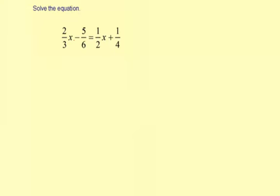Solve the equation. We have 2/3x - 5/6 = 1/2x + 1/4. We have variables on both sides of the equation. Let's try to get the variables on the left and the rational numbers or the constants on the right.